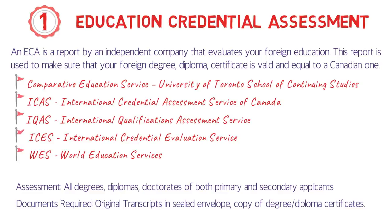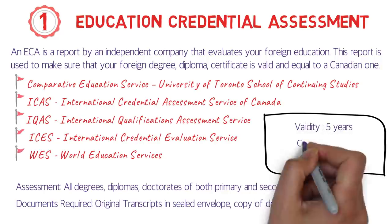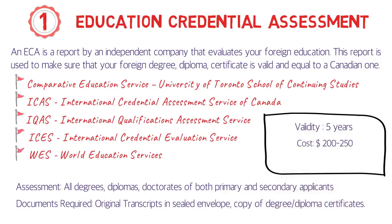Note that 10th and 12th grade certificates and mark sheets are not required. The validity of the ECA is five years. The cost is around 200 to 250 Canadian dollars. Processing time is one to four months — WES typically takes around 1.5 to 2 months, while other organizations can take three to four months.